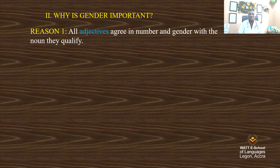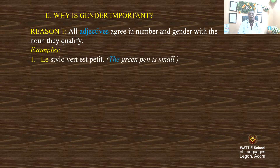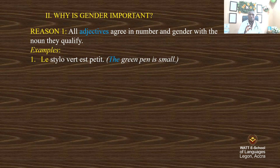Reason one is very important — pay attention. All adjectives agree in number and gender with the noun they qualify. Please pay attention to what I am going to teach you in this lesson so that you don't find yourself confused when we are using bleu or la, un or une, l'apostrophe.